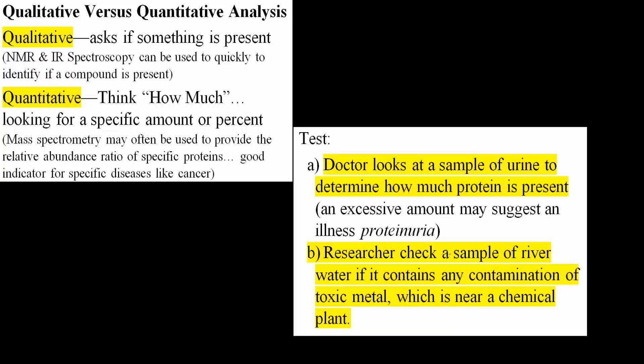A researcher checks a sample of river water to see if it contains any contamination of toxic metal, which is near a chemical plant. So which one of these is a qualitative test and which one is a quantitative test?